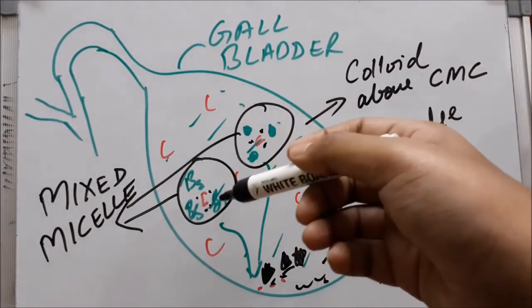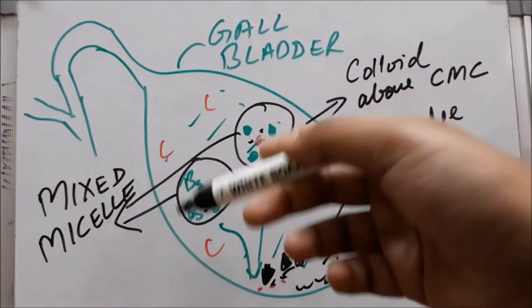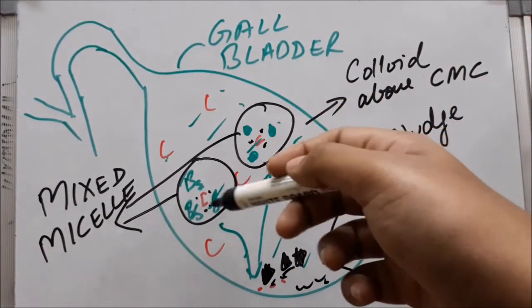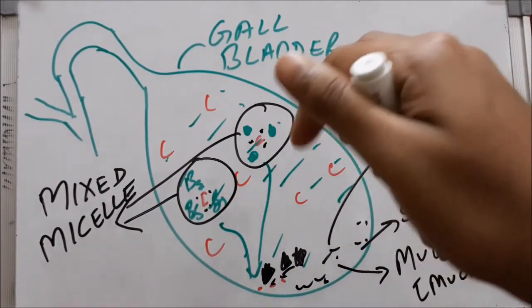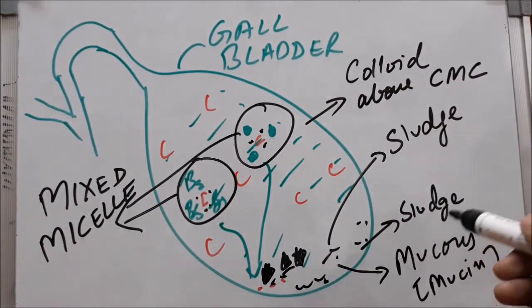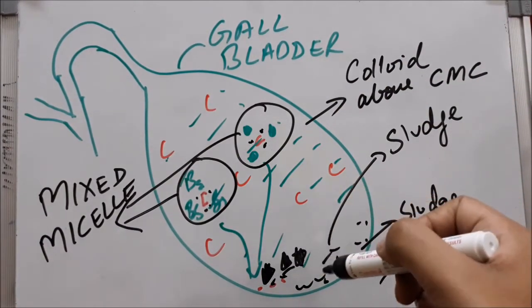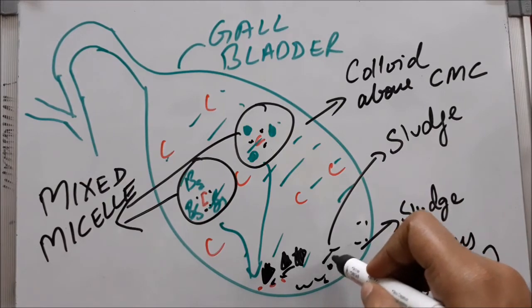Slowly there would be sludge formation, and these monohydrate crystals lodged into the mucus will start the nucleation state.